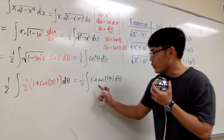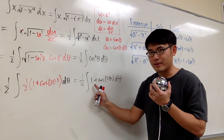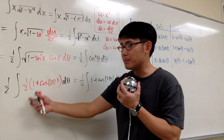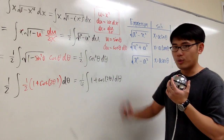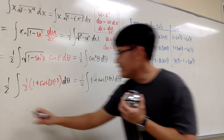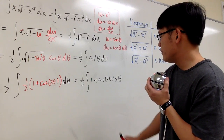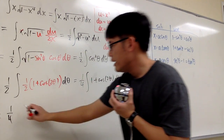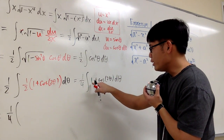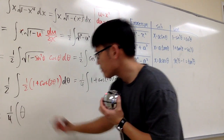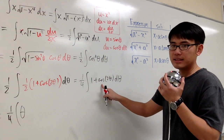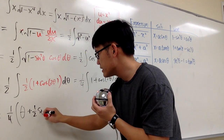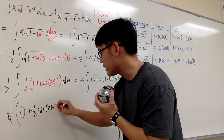I should note: although there is a 1 here, I cannot take it outside — I still have to integrate it. Anyways, we get 1 over 4 on the outside. The integral of 1 in the theta world is theta, and the integral of cosine 2 theta gives us plus 1 half sine of 2 theta.